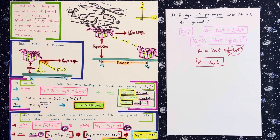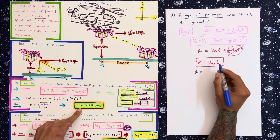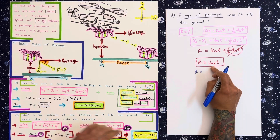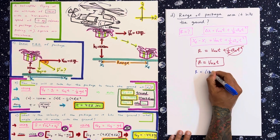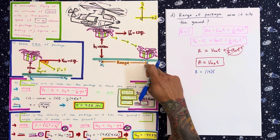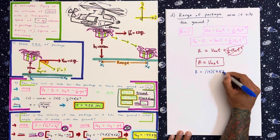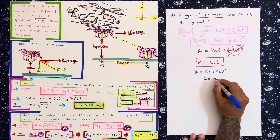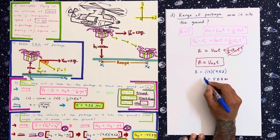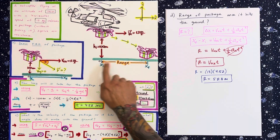Let's plug in the numbers. The time we calculated in Part B is 4.52 seconds. So range equals 13 times 4.52, giving us a range of 58.8 meters. That's the maximum distance the package covers horizontally.